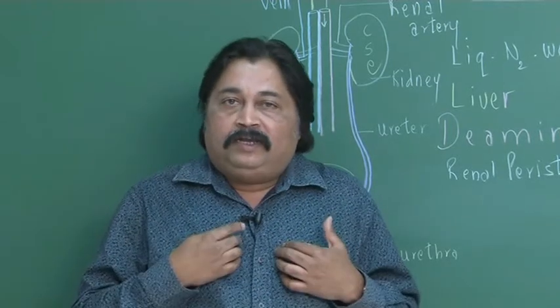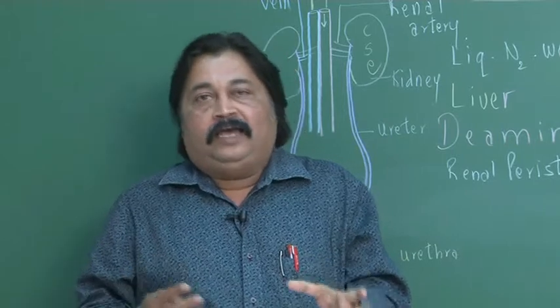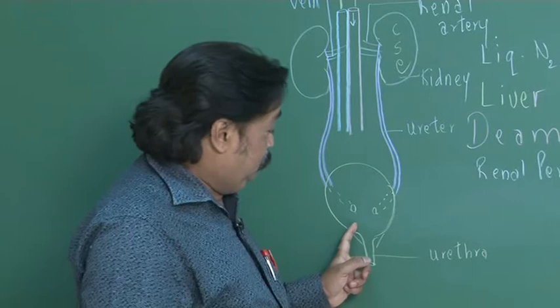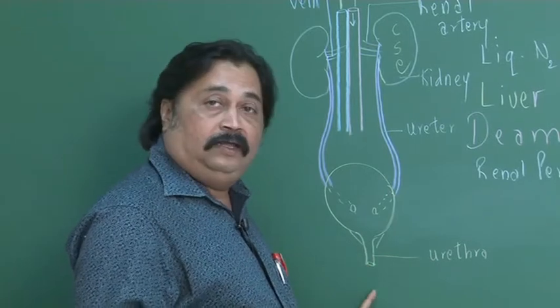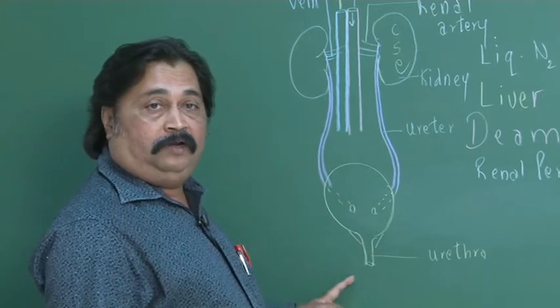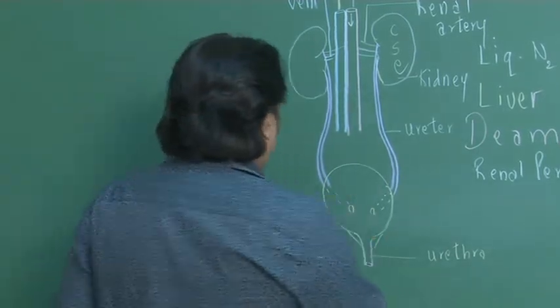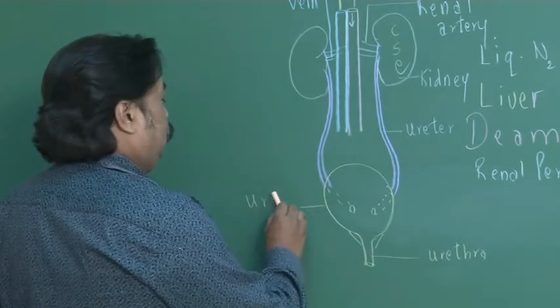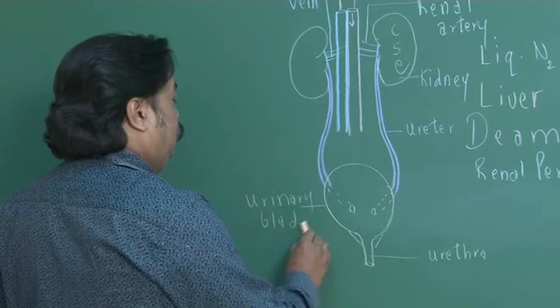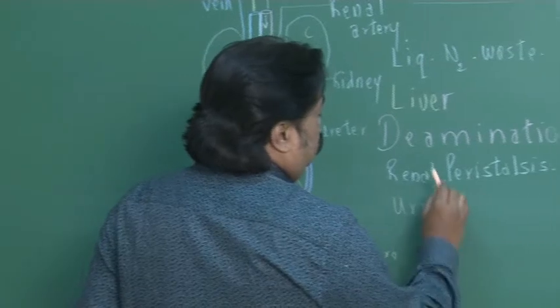When adequate urine is collected, at that time, voluntarily, we go to the loo. The sphincter dilate. And then somebody will say, what a relief. See over here, this is the urethra. It's a short tube as compared to ureter. Urethra transports urine from the urinary bladder to the environment. And that process is called as urination.